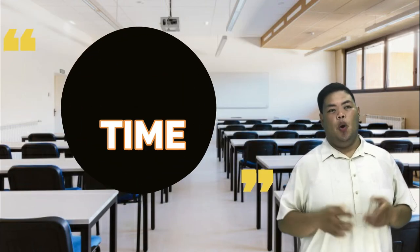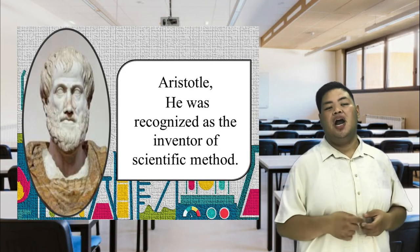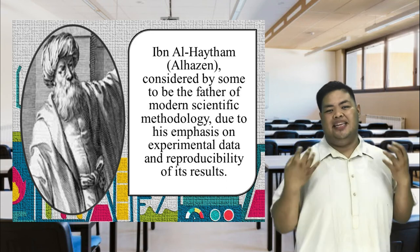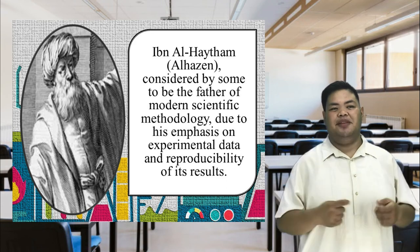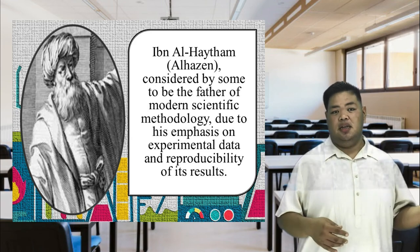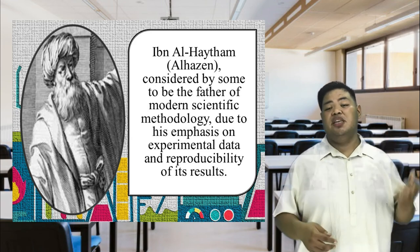Trivia time! We also met some of the greatest scientists of the world, like Aristotle, who was recognized as the inventor of scientific method. And also Nicholas Copernicus, or Ibn Alhazen, considered by some to be the father of modern scientific methodology, due to his emphasis on experimental data and reproducibility of its results.